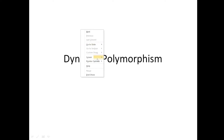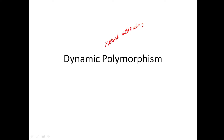So what is dynamic polymorphism? We have seen what is static polymorphism. What is static polymorphism? We talked about method overloading. Method overloading is a method taking different forms inside the class — it depends on the number of arguments and the type of arguments it takes. The type of method that should be invoked is decided upon compilation, so that is called static polymorphism.